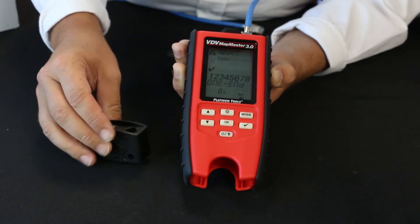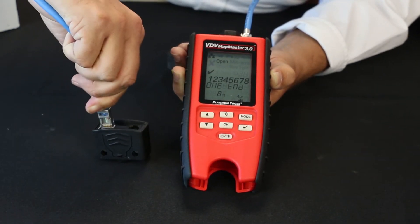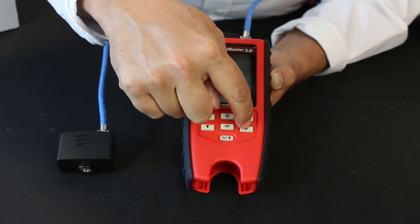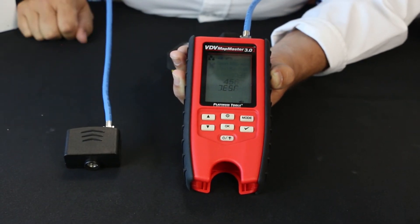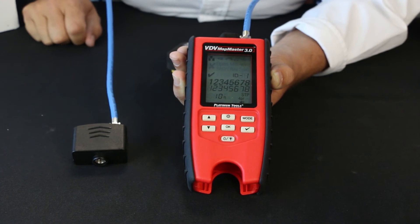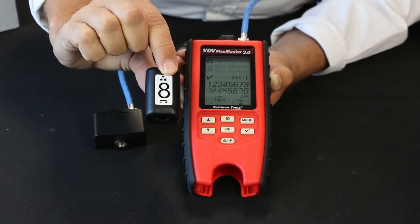You take the remote off, plug the cable into the remote. Now you'll be able to do a full test of your cable and your test passes. It gives you length of cable and ID. You can ID cables up to eight locations using a remote like this.